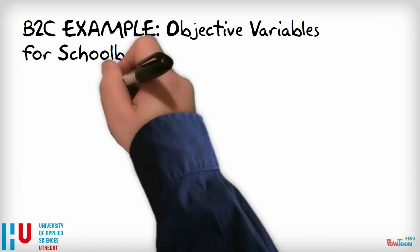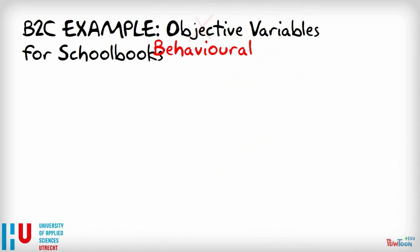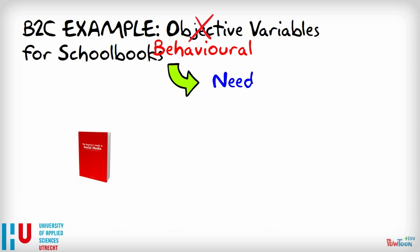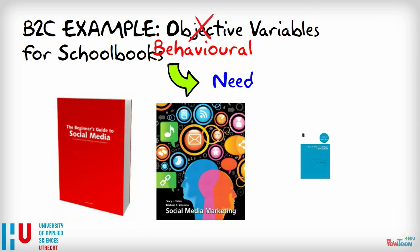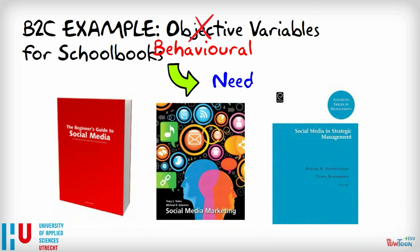A behavioral variable that we could use for segmentation is the difference in the need, whether the book required is at the beginner, intermediate, or advanced level.